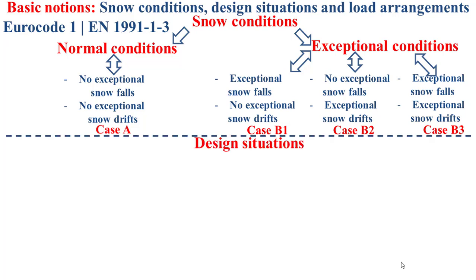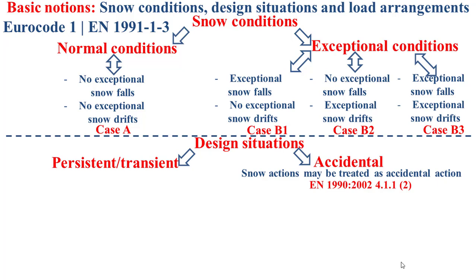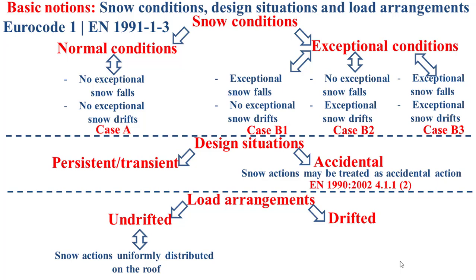Two design situations are distinguished: the first one is the persistent transient design situation and the second one is the accidental design situation. In accordance with European standard EN 1990-2002, snow actions may be treated as accidental action for a particular condition and depending on geographical locations. For load arrangements, we have two types: the undrifted load arrangement, characterized by snow actions uniformly distributed on the roof, and the drifted load arrangement, characterized by snow actions non-uniformly distributed on the roof.